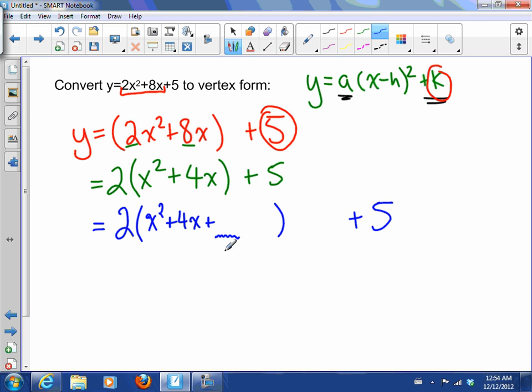The problem with that is while I have x² + 4x, I have to add something else in there in order for this to be a perfect square trinomial. What I want you to think about is what could go here so that this would be a perfect square trinomial. We're going to take half of that 4 and we're going to square it.